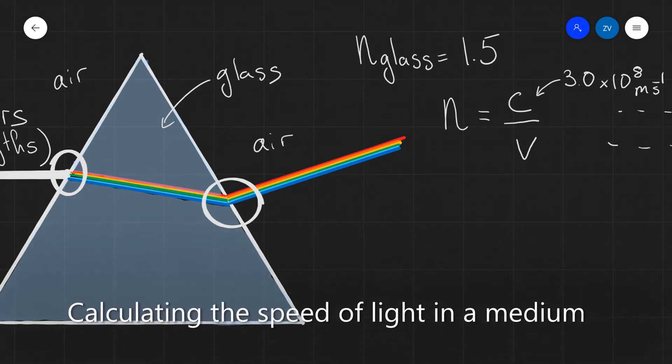We can use the refractive index formula to calculate the speed of light in a substance. For instance, if we wanted to calculate the speed of light in glass, knowing the refractive index of glass is 1.5, then all we need to do is have our formula n equals c over v. Then we're just going to rearrange for the speed of light in that medium, which is v. So v will be equal to c divided by n.